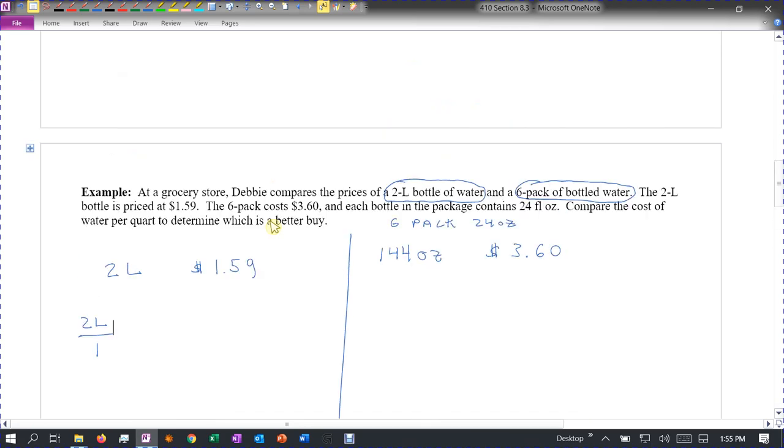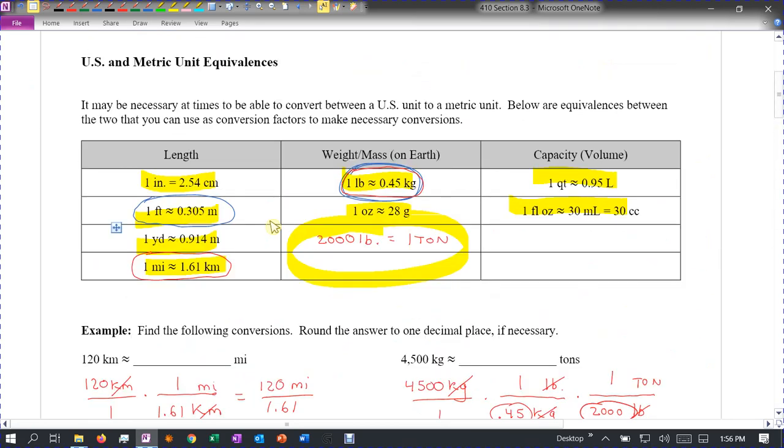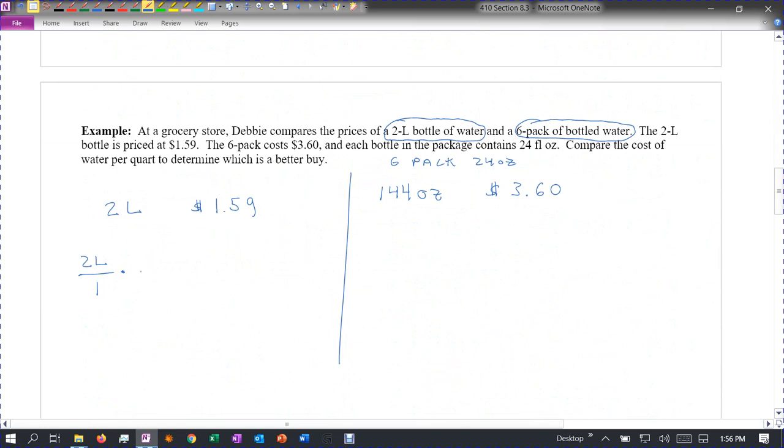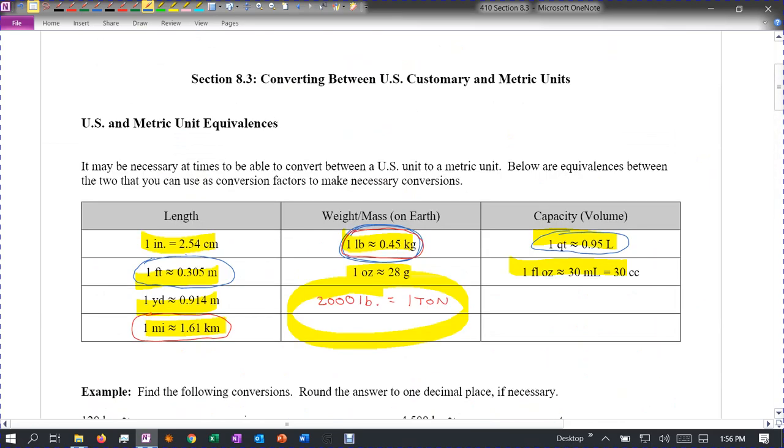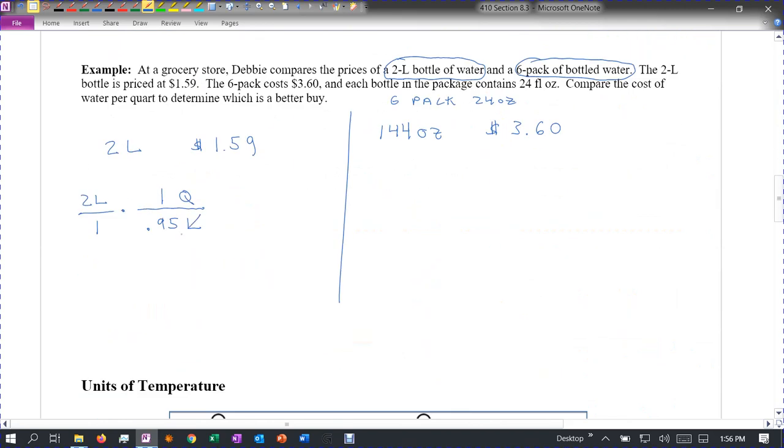So 2 liters. Let's see if we can get from liters to quarts. Over here we have .95 liters is 1 quart. So I'm going to go and say .95 liters is 1 quart. I'm going to double check that. So remember I put the liters on the bottom so they'll cancel. So this is going to be 2 quarts over .95. So I go ahead and divide that. 2 divided by .95 on my calculator. I get about 2.11, I'm going to round to do two decimal places, quarts. So that's how much I'm getting in the 2 liter bottle, 2.11 quarts.